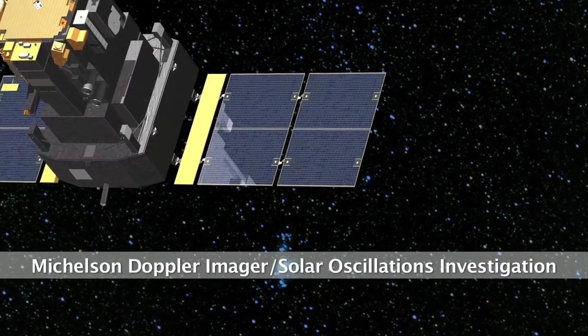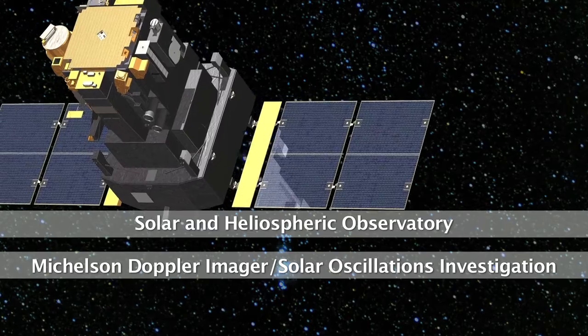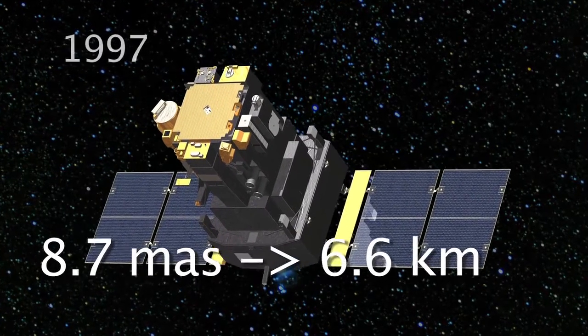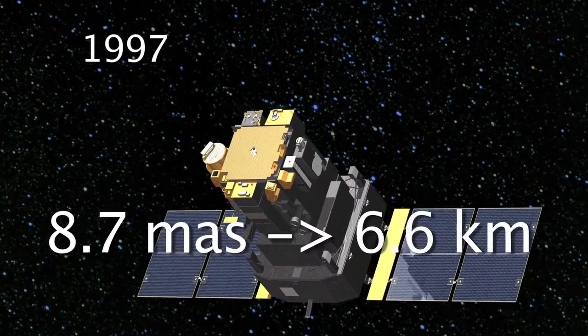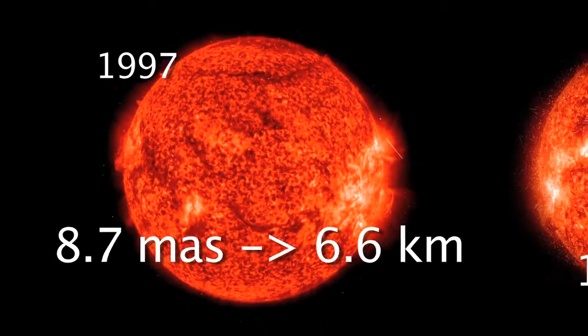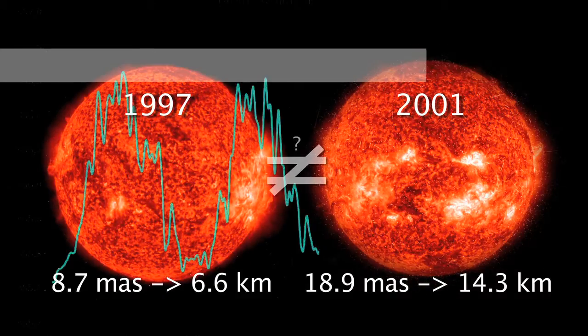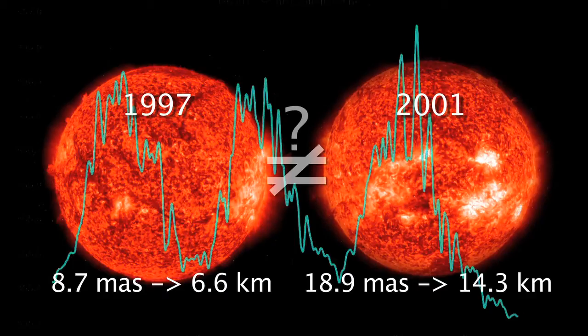First, the MDI-SOI instrument of the space mission SOHO, whose measures of the solar oblateness are of 8.7 milliarcseconds in 1997 at the minimum of solar spots, and 18.9 milliarcseconds in 2001 at the maximum of solar spots. Is the difference due to solar activity?